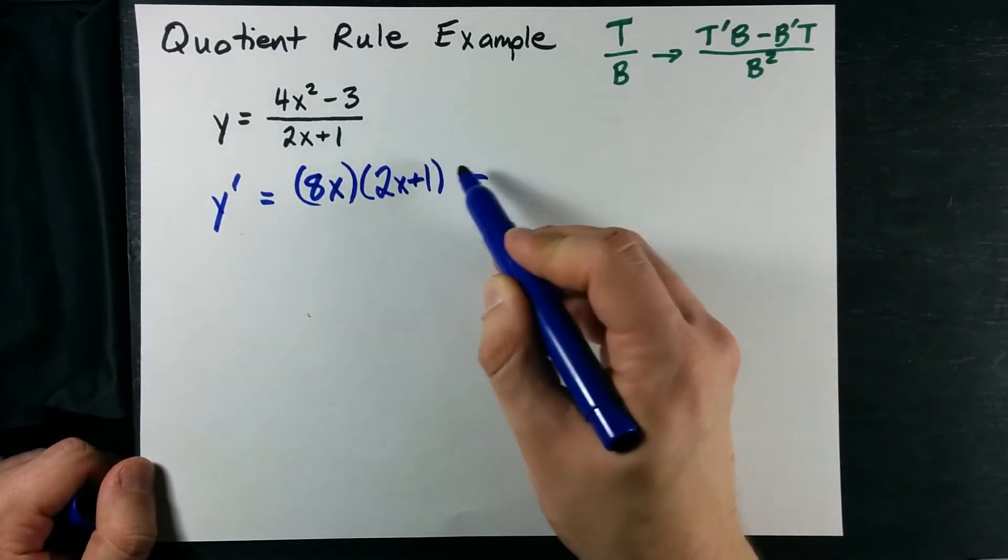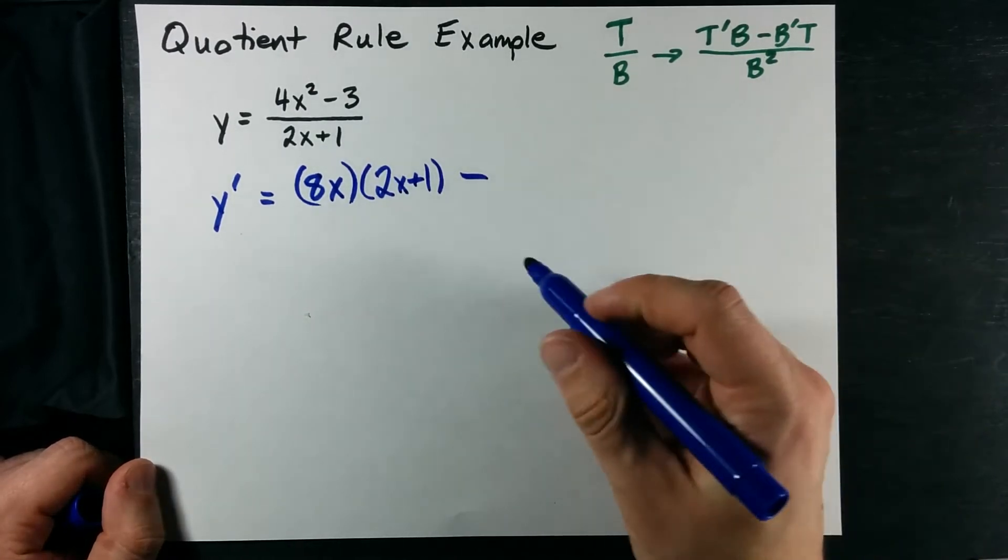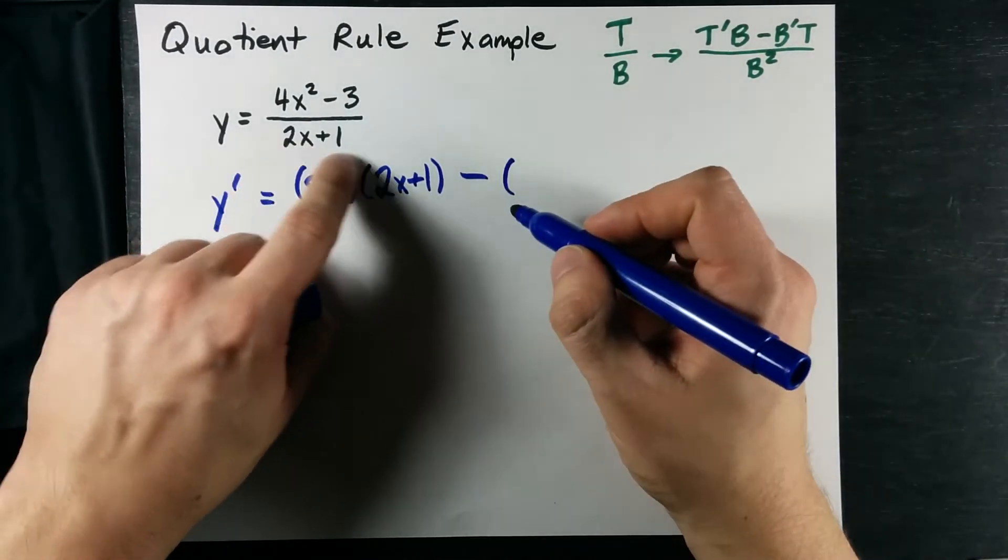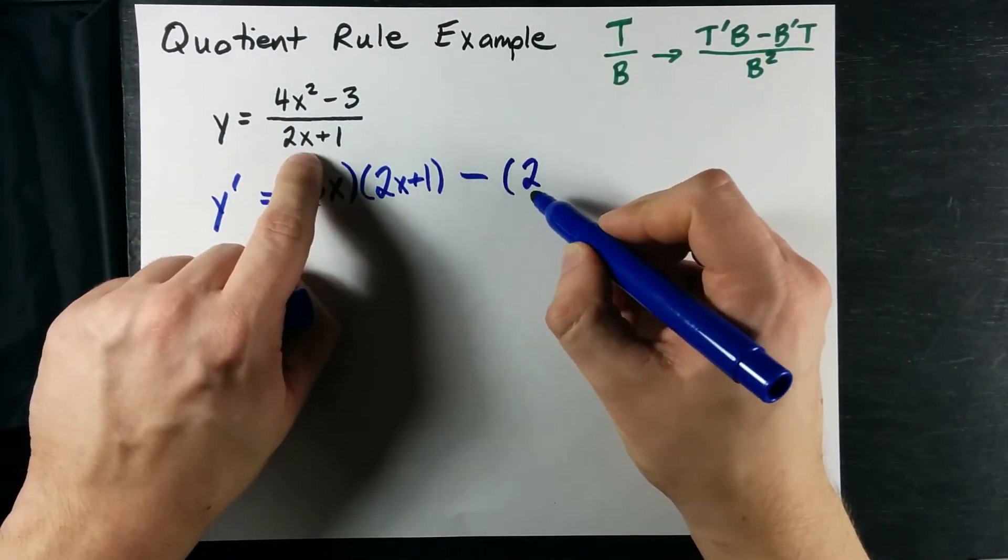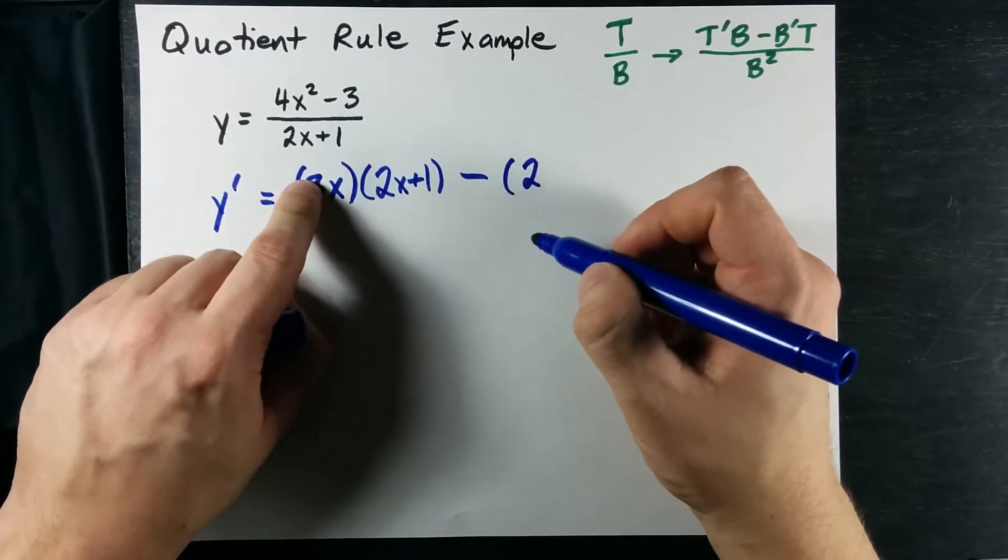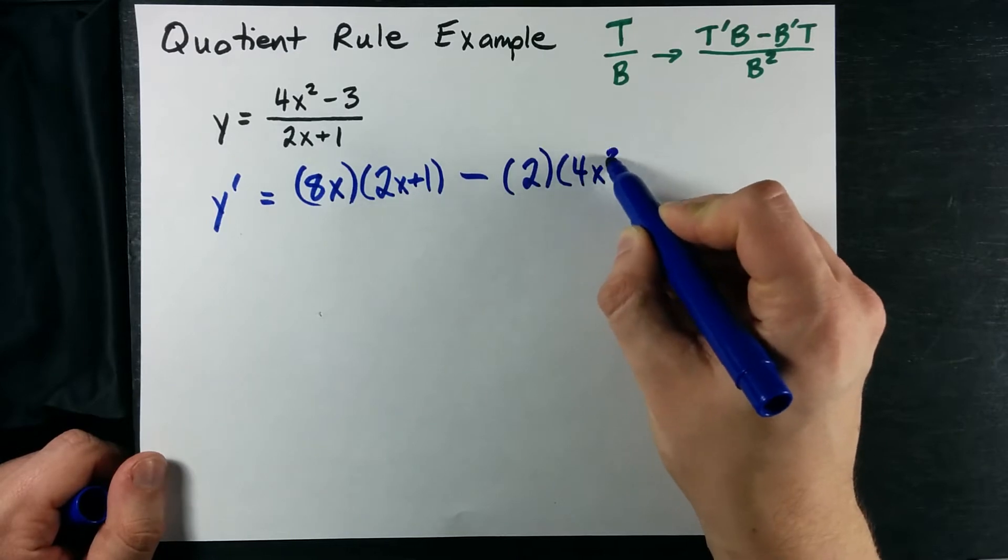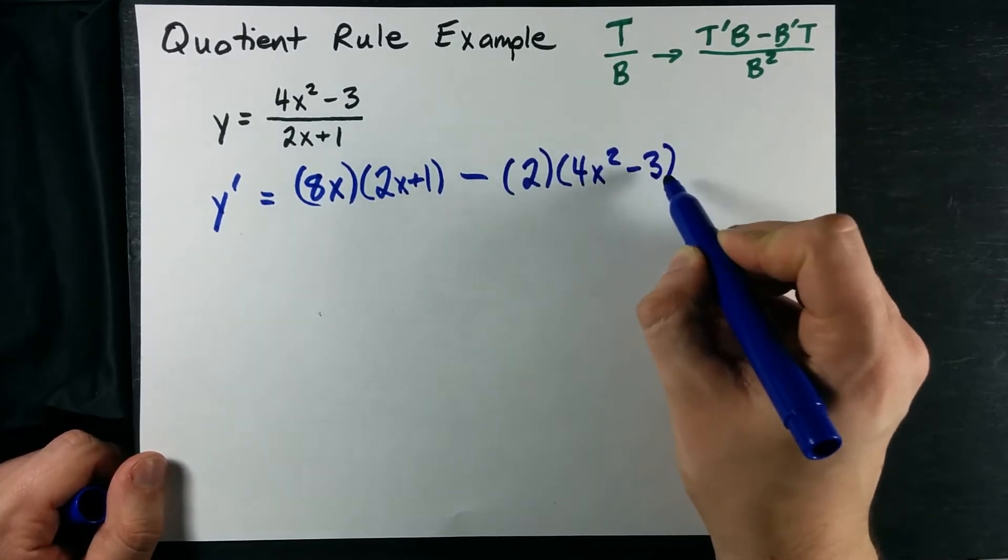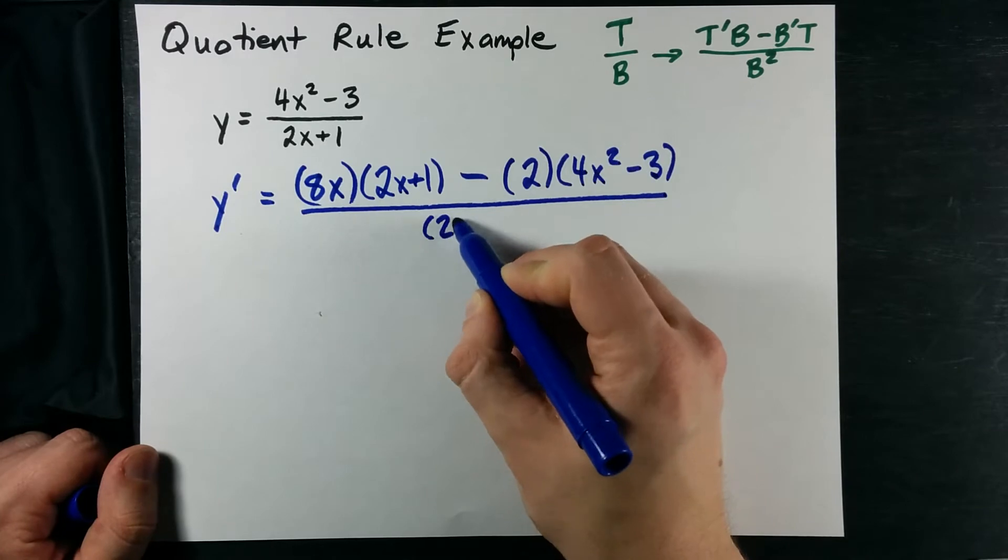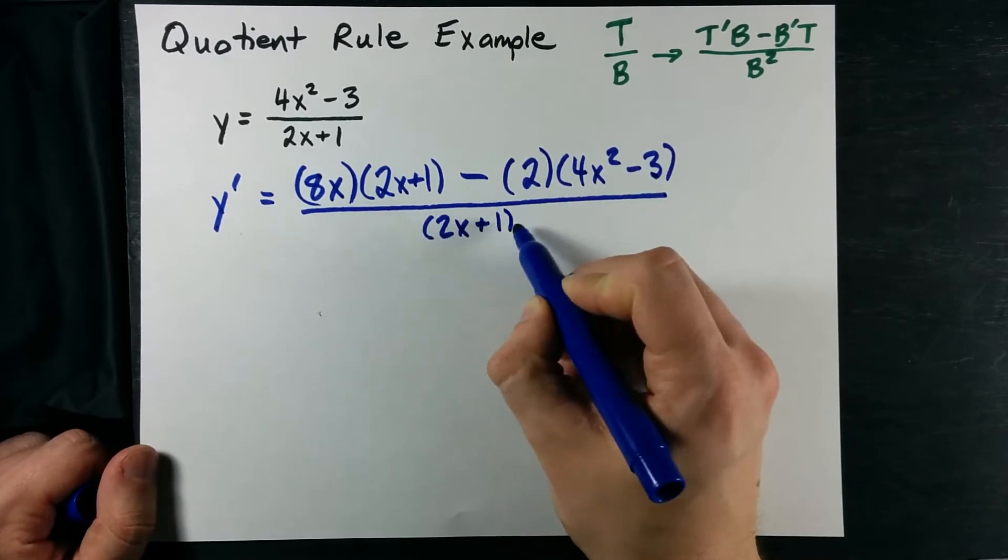minus the derivative of the bottom. Derivative of the bottom here is simply 2 because the X drops off when you take the derivative, times the top, which is 4X squared minus 3. Unchanged. All over whatever the bottom was squared.